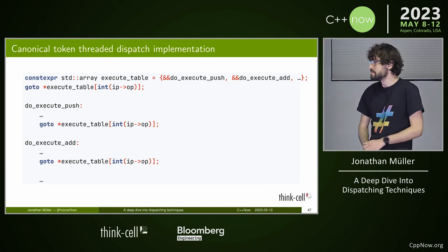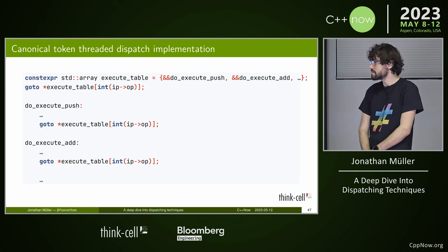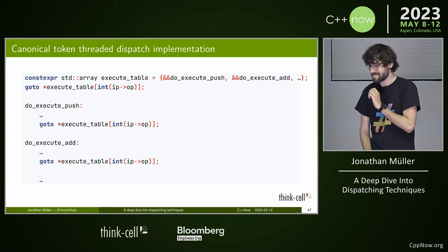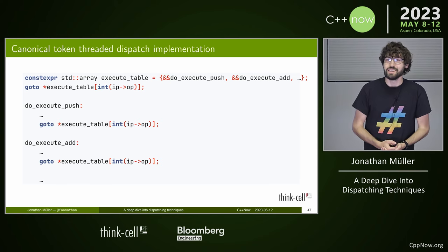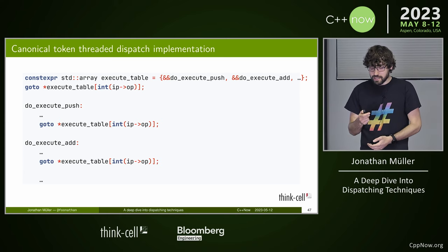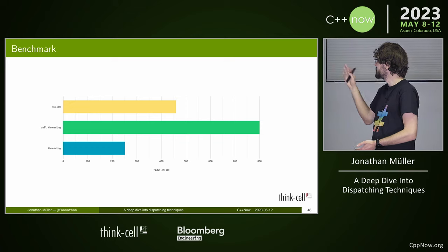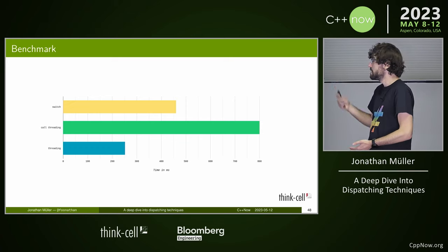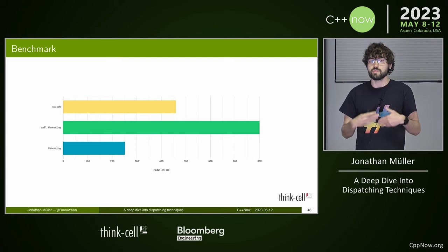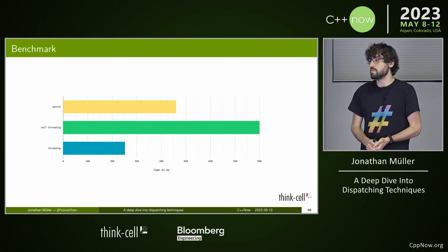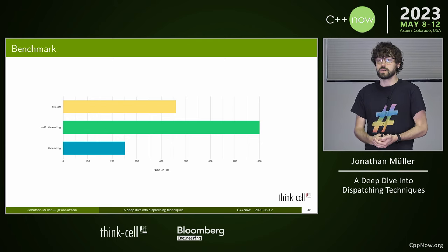Question: is this implementable in standard C++ without the extension? Not quite. Let's benchmark the technique. Look at that — we actually made it faster. We're almost twice as fast compared to switch, and significantly faster than function pointers. This is because we now have efficient dispatch using the table but without any of the overhead of call by reference.